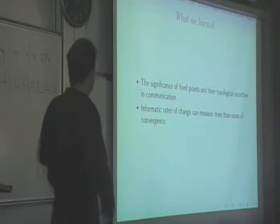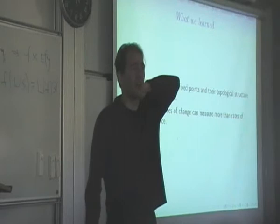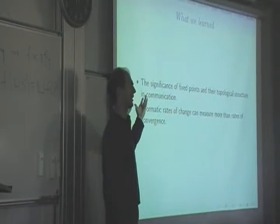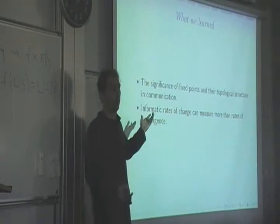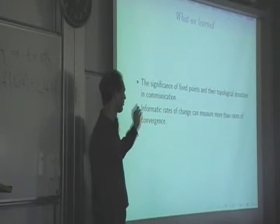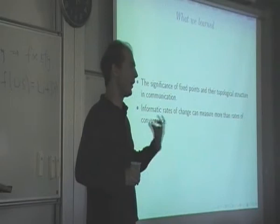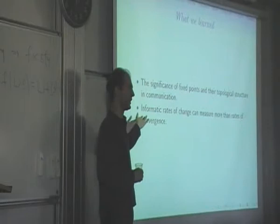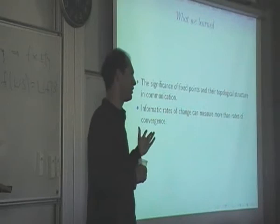So what we learn is that fixed points and their topological structure have significance — it's strange to see a connection between the set of fixed points being Scott closed and a channel being entropy increasing, but that's what the theorem shows. And the informatic derivative, which we've known for a long time can measure the rate of convergence to a fixed point and extends the classical derivative, turns out to also be able to compute channel capacity — something we didn't know before. Thank you.